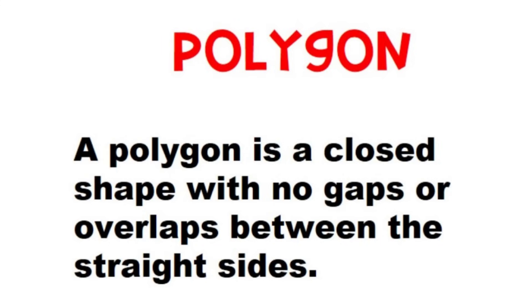Polygon. A polygon is a closed shape with no gaps or overlaps between the straight sides.